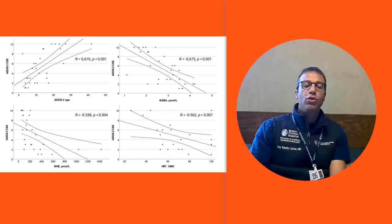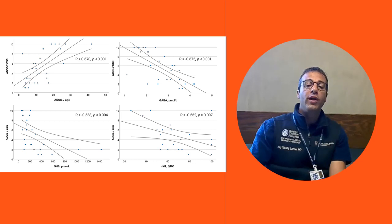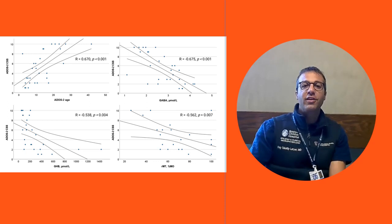This figure shows the results I just described. On the y-axis you can see the autism severity scale, and on the x-axis you can see the different variables that we correlated with it. You can see the positive correlation with age and the negative correlation with GABA, GHB, and the resting motor threshold.